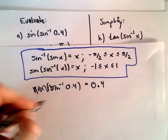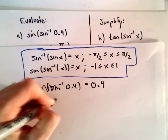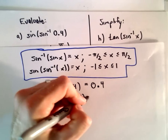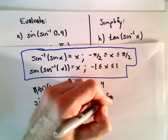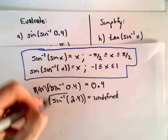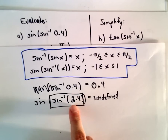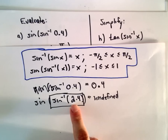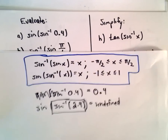A quick note: if it was something like sine of inverse sine of 2.4, this would actually be undefined. The reason is simply because inverse sine of 2.4 is undefined. If you think about it — sine of what number is 2.4? Well, there isn't any.